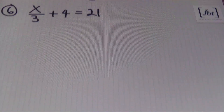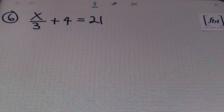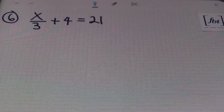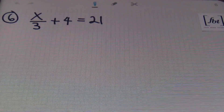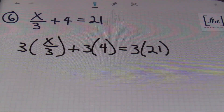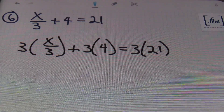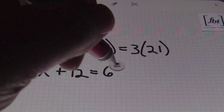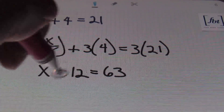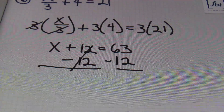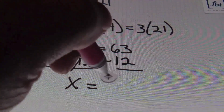Problem number six: notice that we have the variable in the numerator. Same thing applies — I still don't want to have a fraction in the equation if I can avoid it. So I'll multiply everything by the one denominator I have, which is three. Multiplying each and every term by three: three times x over three plus three times four equals three times 21. Simplifying: the threes cancel out to leave me with x plus 12 equals 63. Getting x by itself, I subtract 12 from both sides, ending up with x equals 51.